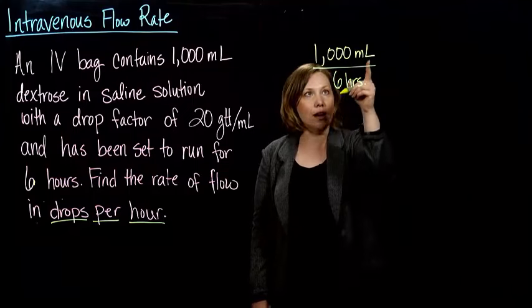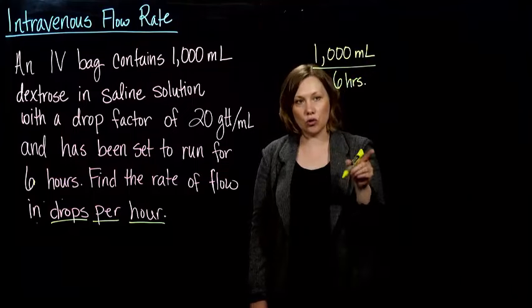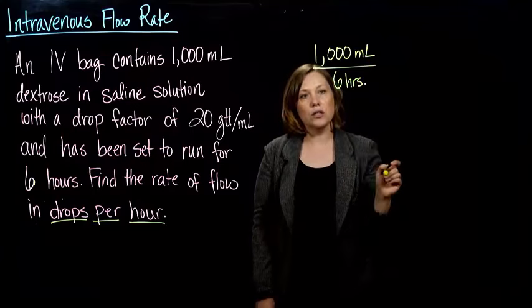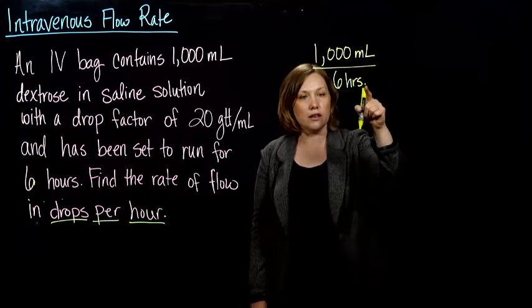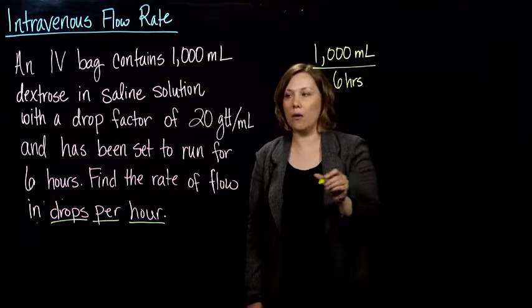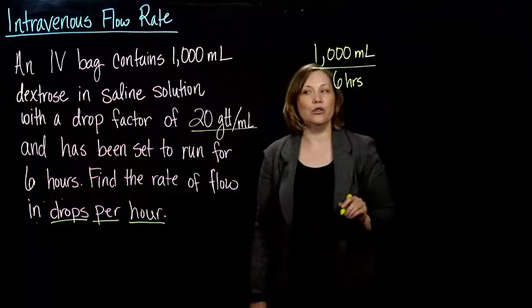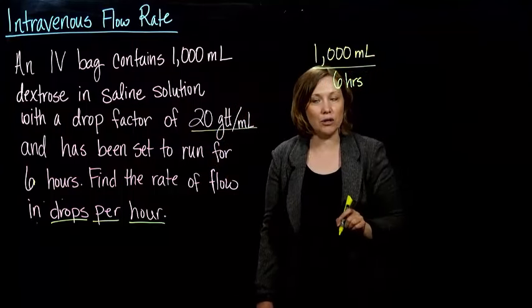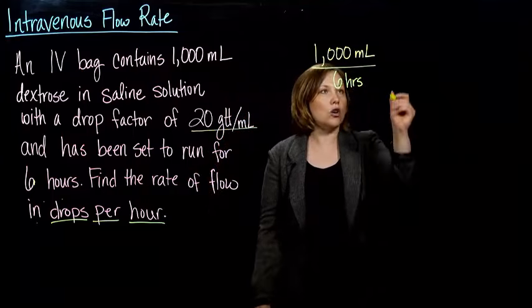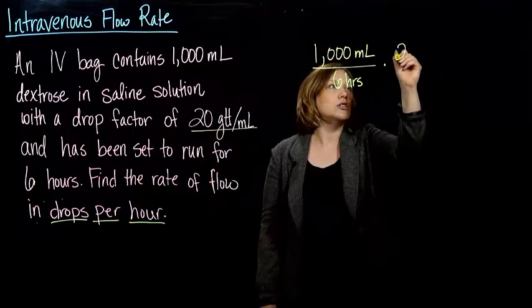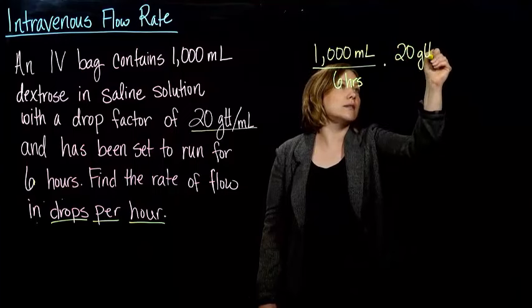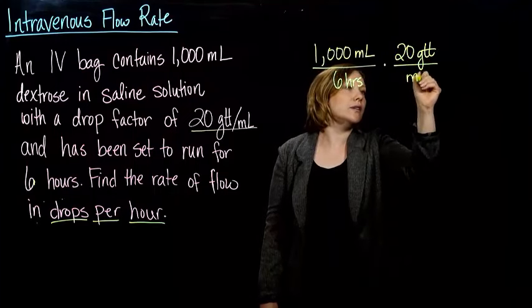But I want it to be not in milliliters, but in drops per hour. So I've got milliliters per hour, I want drops per hour, and I know it takes 20 drops to make 1 milliliter for my solution. So if I multiply by 20 drops per milliliter,